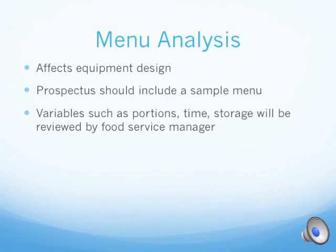The next step in planning is the menu analysis. This is a very important step because it affects the equipment design. The prospectus should include a sample menu, and variables such as portions, time, and storage will be reviewed by the food service manager. The food service manager also has the power to make changes to the menu he deems necessary. This is important because if you have a limited menu, you may not need as much equipment as someone who has a full service menu. So the menu analysis will determine what equipment is needed, which can help determine the kitchen size and dining room size later on in the design process.